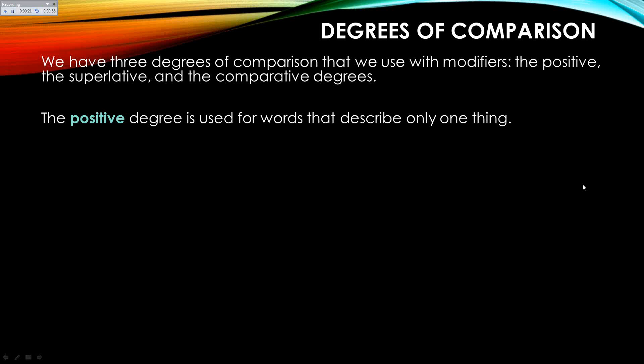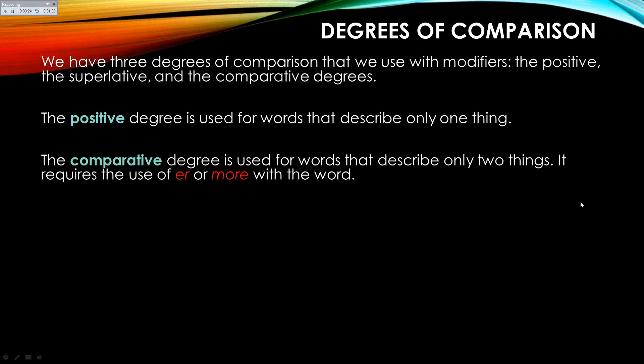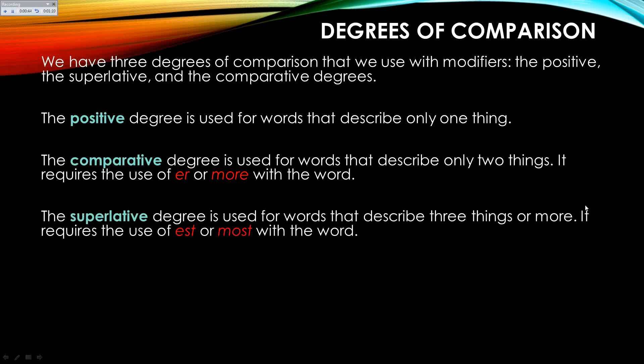The positive degree is used for words that describe only one thing — like 'that dog is pretty.' The comparative degree is used for words that describe only two things. So if I'm saying Sally is prettier than Sarah, I put that ER on pretty to get prettier. I could also use the word more, and I'll get more into that in a little bit.